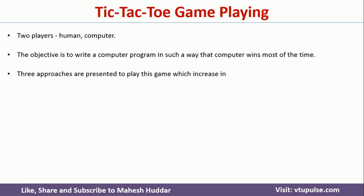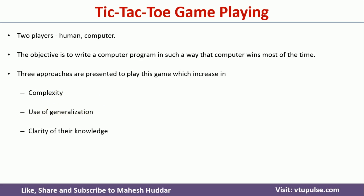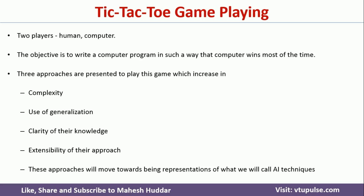We are going to discuss different approaches: Program 1, Program 2, and Program 3. As you go from Program 1 to 2 to 3, the complexity increases, and the use of generalization also increases. Program 2 is more general than Program 1, and Program 3 is more general than Program 2. The clarity of knowledge and extensibility to new games improves from program to program.